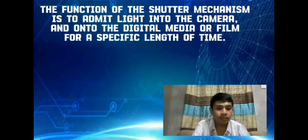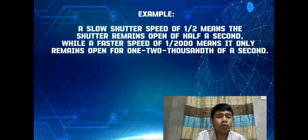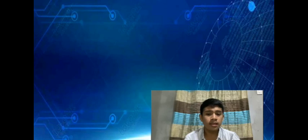The function of the shutter mechanism is to admit light into the camera and onto digital media or film for a specific length of time. For example, a slow shutter speed of 1/2 means the shutter remains open for half a second, while a faster speed of 1/2000 means it only remains open for one two-thousandth of a second. A faster shutter speed means less light enters the image; a slower shutter speed means more light.